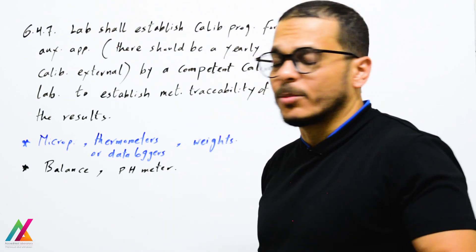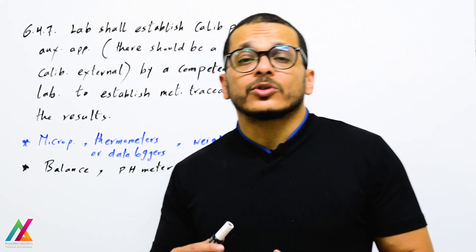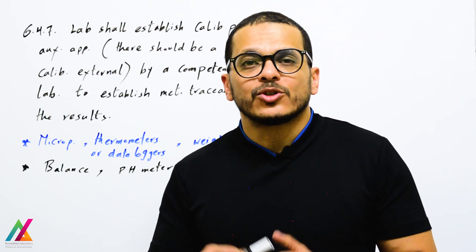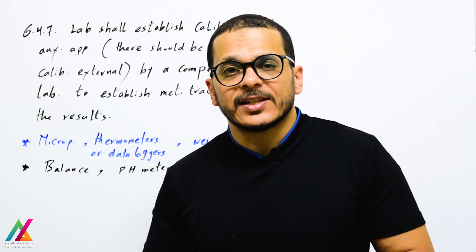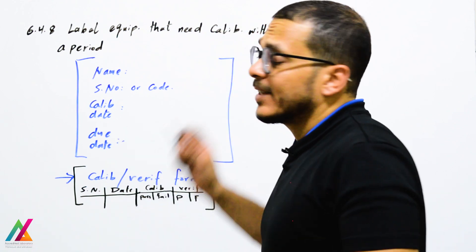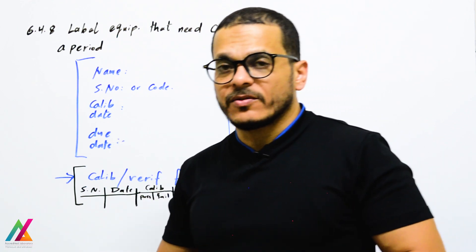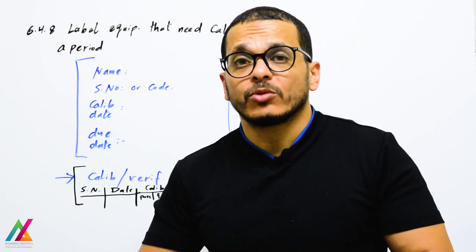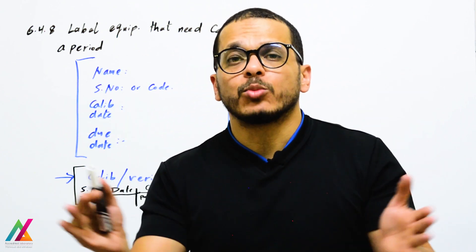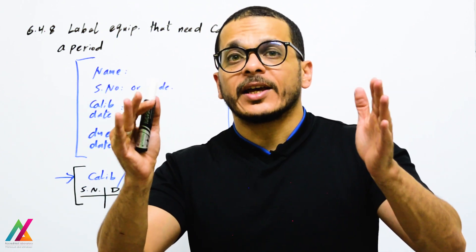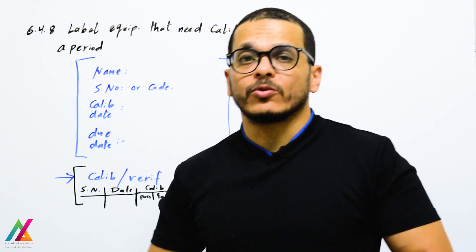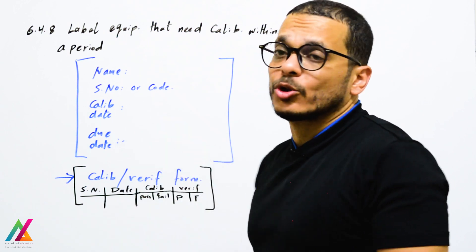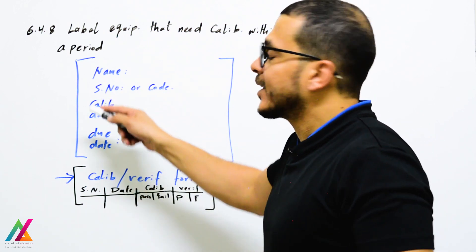A balance is calibrated internally using calibrated weights, and a pH meter is calibrated using buffers. Other instruments used for measurement of target analytes shall be calibrated before use to ensure valid results. Equipment requiring calibration within a specific period shall be labeled to prevent misuse after the calibration due date. Labels should include the instrument name, serial number or code, calibration date, and due date.